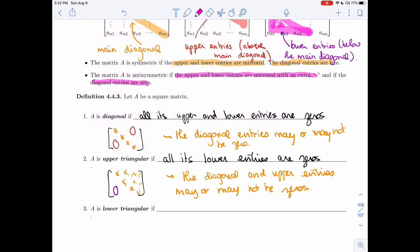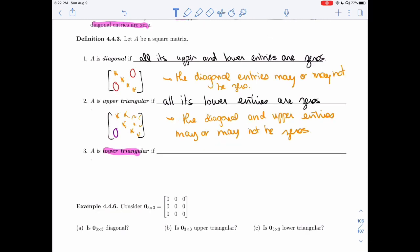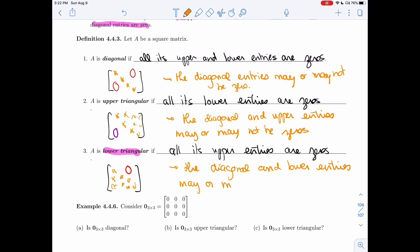All right, so a matrix is lower triangular if all its upper entries are 0s. And so in that case, all the interesting stuff happens on the diagonal and on the lower entries. But above the diagonal, you must have 0s. So again, the diagonal and lower entries may or may not be 0s.